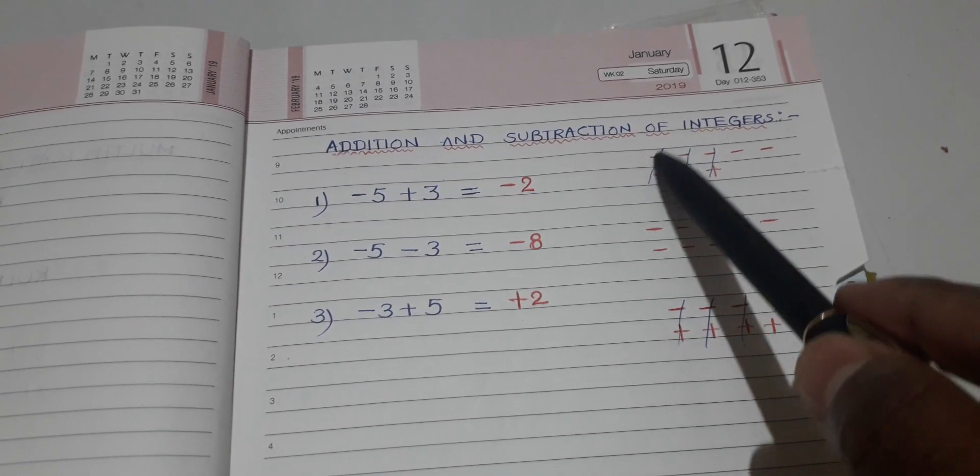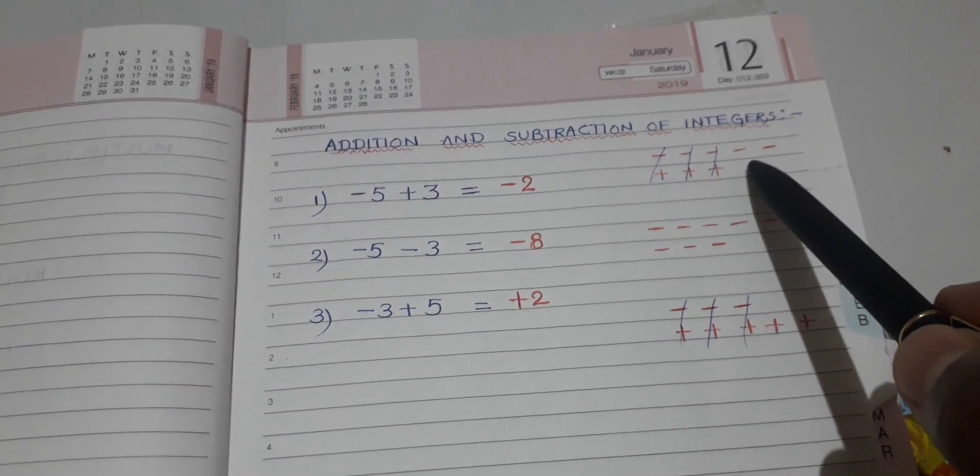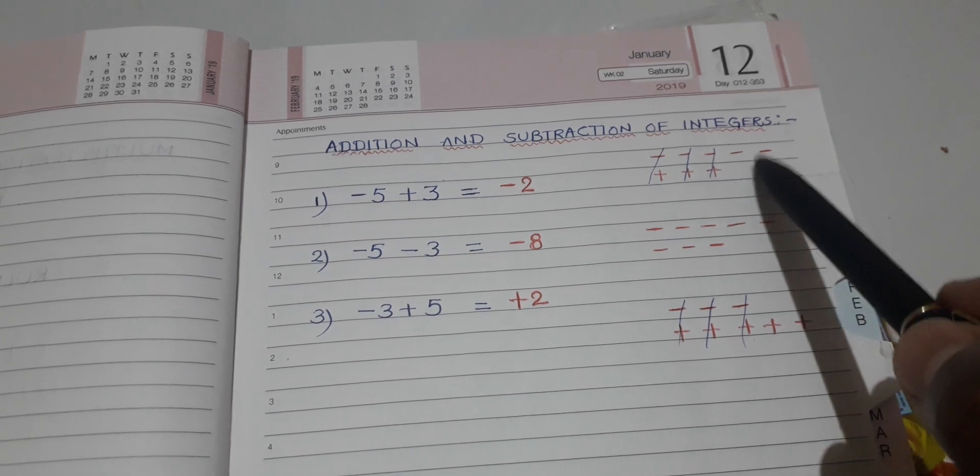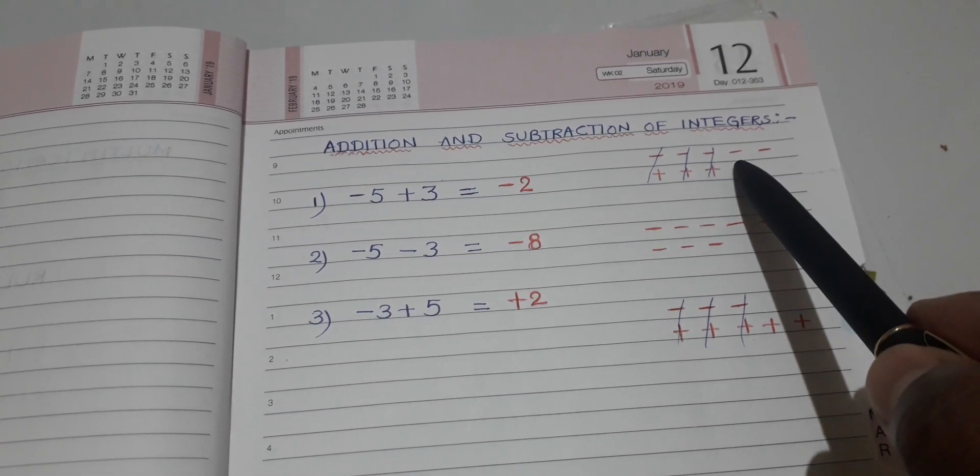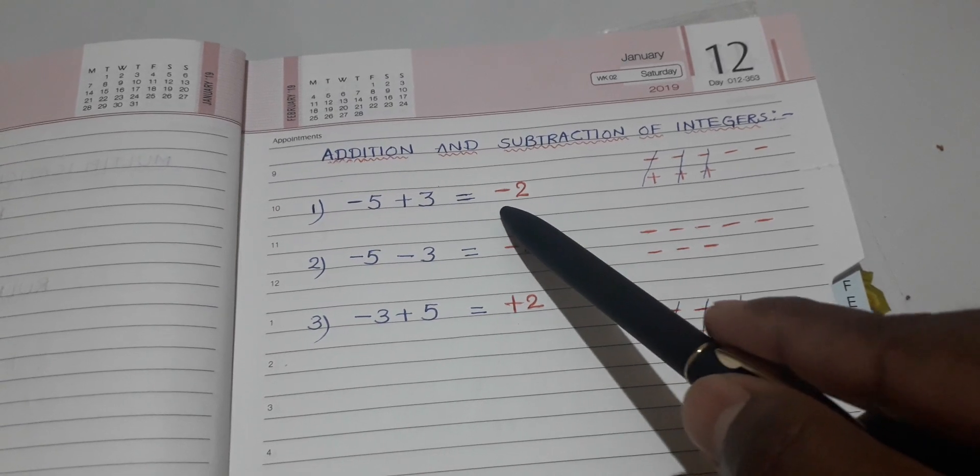Then wherever minus plus is there, you cancel out. Then what you are going to get? 2 minus symbols are left. So that's why you write the answer as minus 2.